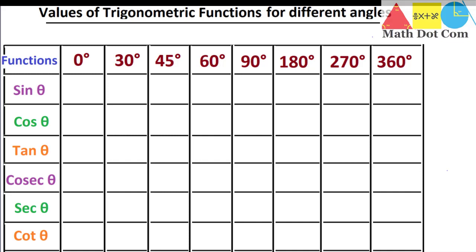Today I will tell you how you can memorize the values, as most of us are unable to memorize them. The total values in this table will be 48, and you have to memorize only 9 values. The remaining 39 values will be derived from these 9 values. So you just need to memorize 9 values out of 48 — isn't it amazing? So let's see how you can do it.